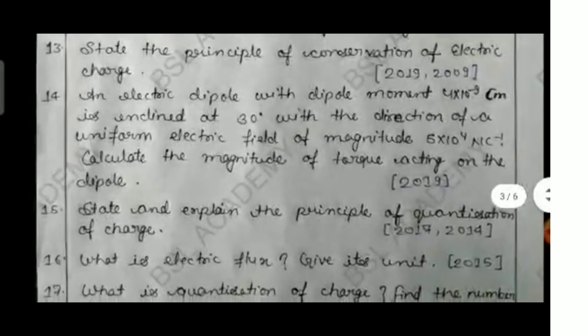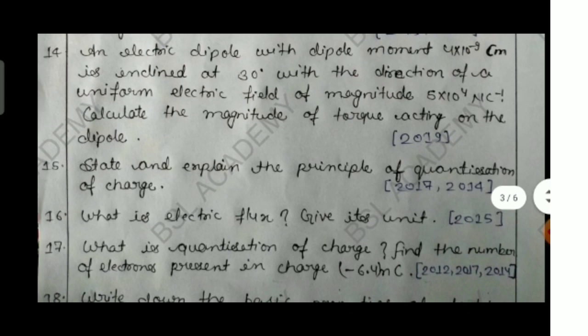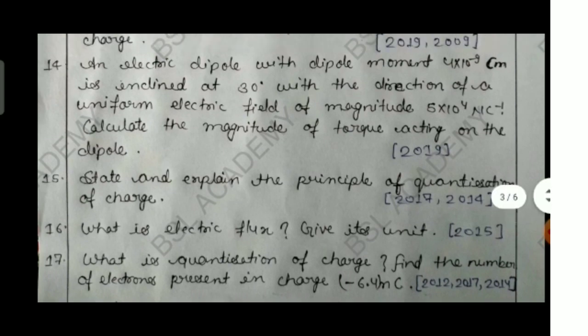Question number fourteen: an electric dipole with dipole moment 4×10⁻⁹ coulomb·meter is inclined at 30 degrees with the direction of a uniform electric field of magnitude 5×10⁴ N/C. Calculate the magnitude of the torque acting on the dipole. This numerical problem was asked in 2019. If you are preparing for the Jharkhand Board, please solve this question.